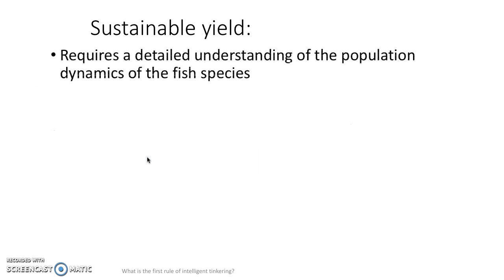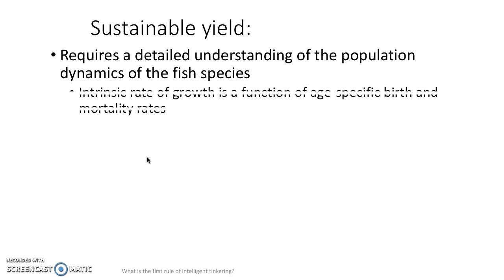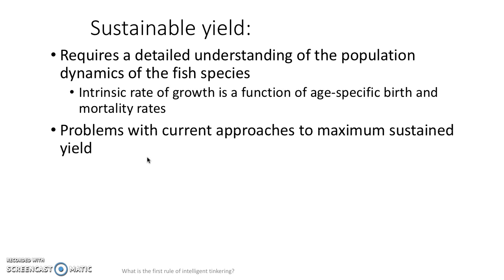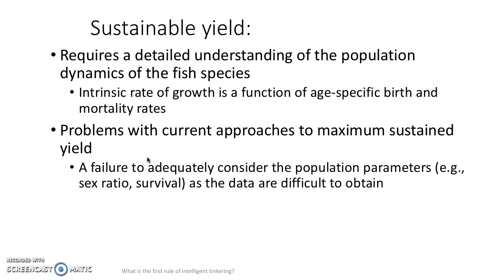Sustainable yield requires a detailed understanding of population dynamics — what's going on with that fish species. The intrinsic rate of growth is a function of age-specific birth and mortality rates. Currently, there are problems with these approaches to maximum sustainable yield. First of all, you don't adequately consider the population parameters — what's the sex ratio of the fish, what's the survival at certain age classes? Those sorts of things are difficult to obtain.